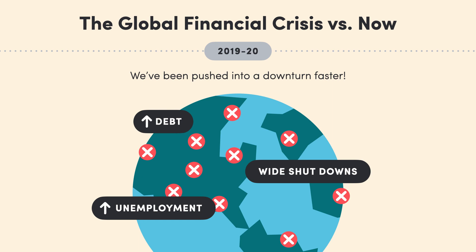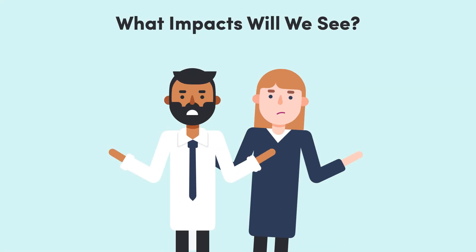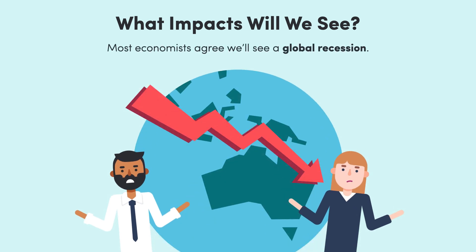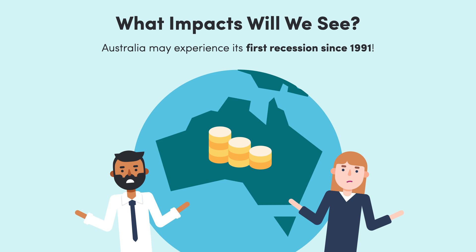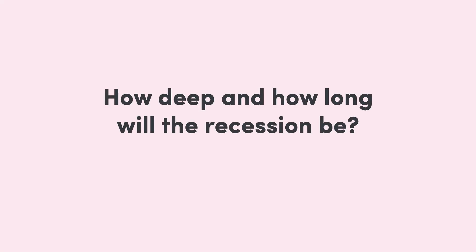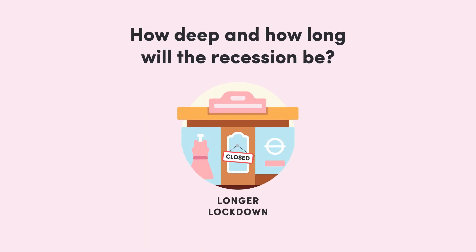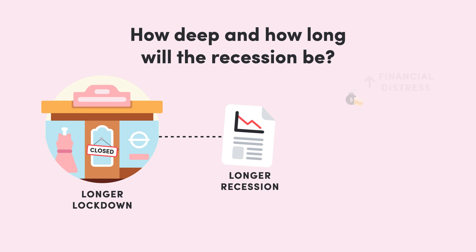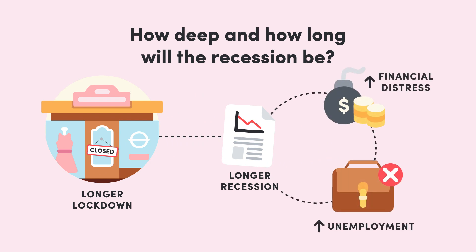So now that we know what's happening and why, what impacts might we see over the next 12 months? The truth is that it's too early to say for certain. Most economists agree we'll see a global recession — the size of the global economy will shrink over the course of the next few months. In fact, Australia is likely to have its first recession since 1991, which didn't even happen during the GFC. The question now is how deep and how long the recession will be. What we can say for sure is that the longer the lockdown lasts, the longer the recession will be, the more companies will experience financial distress, and the more unemployment we will expect. These things are all correlated — they move together.